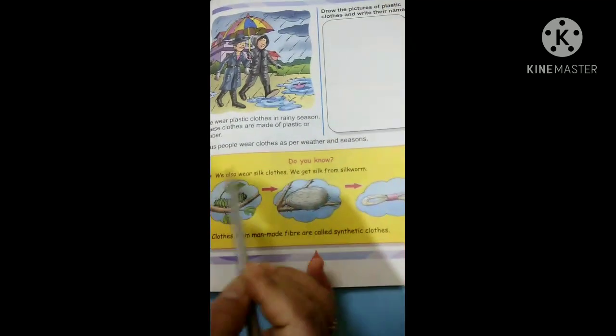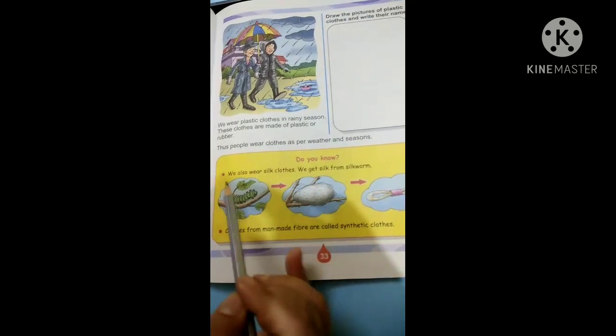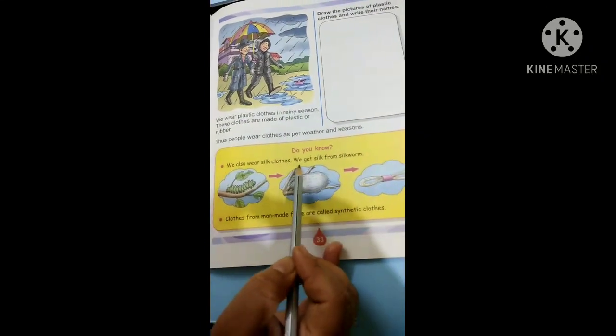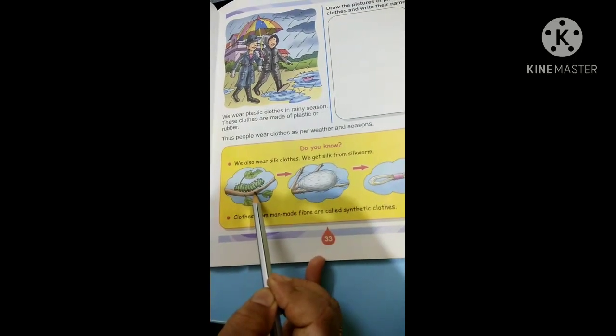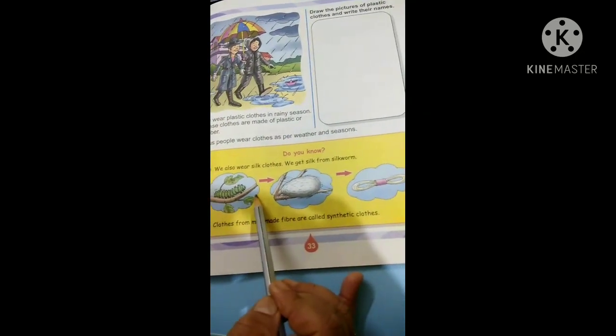Now, let us see what is said in the do you know section. We also wear silk clothes. We get silk from silkworm. Here is the silkworm. And we are getting silk thread from silkworm.